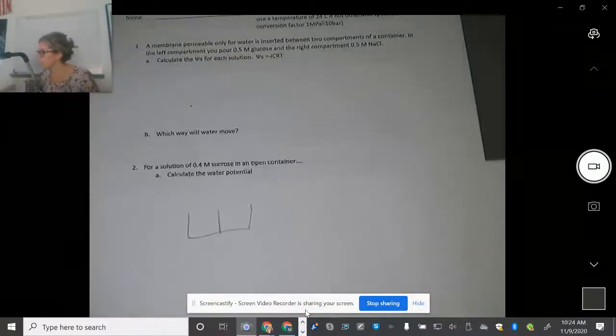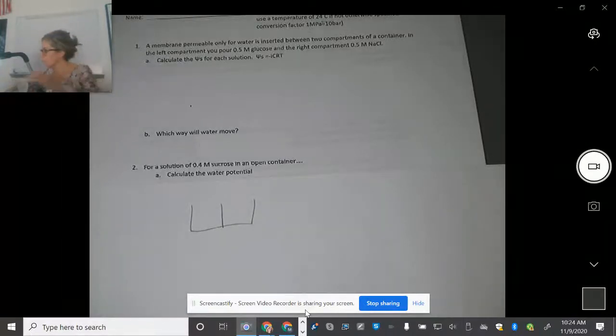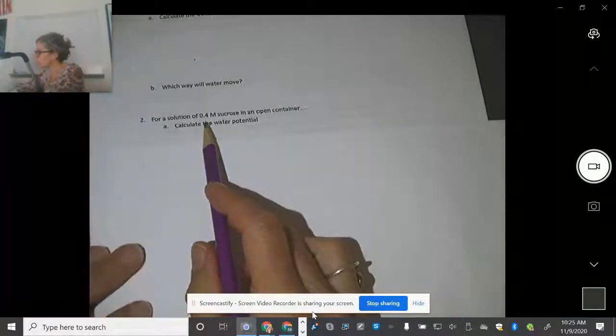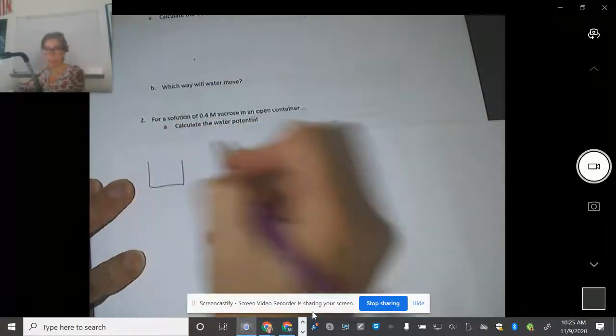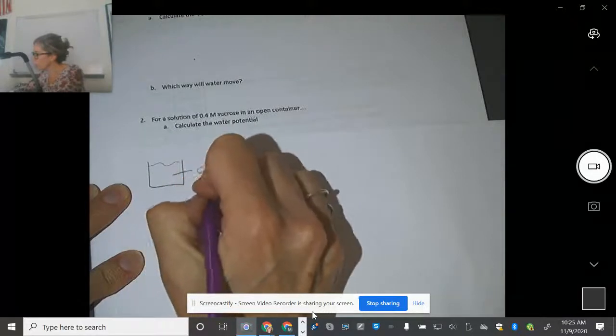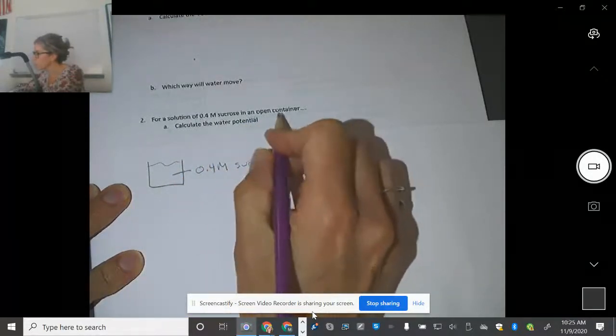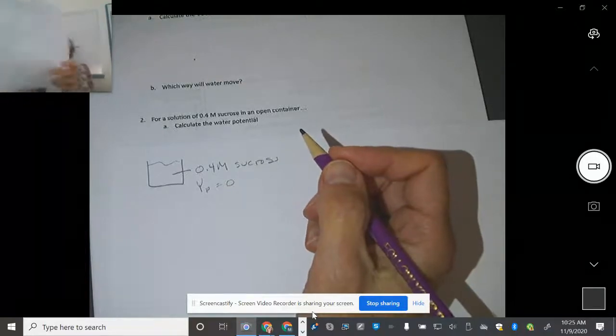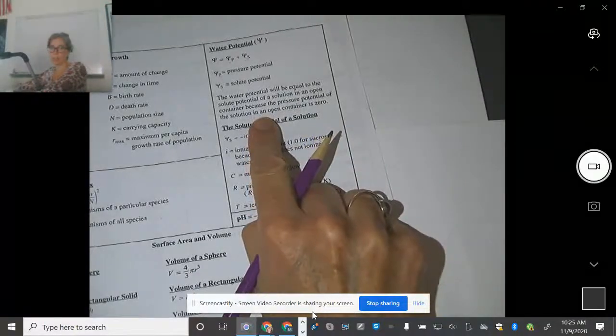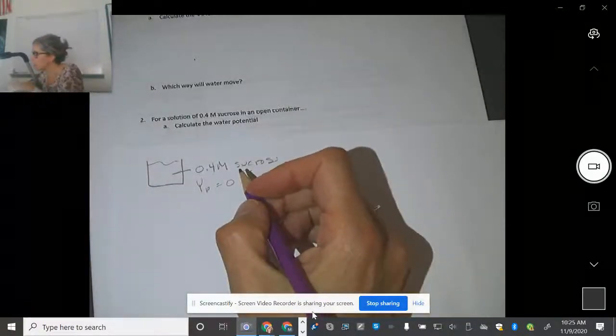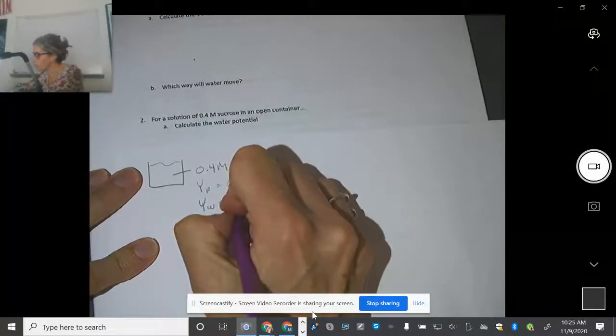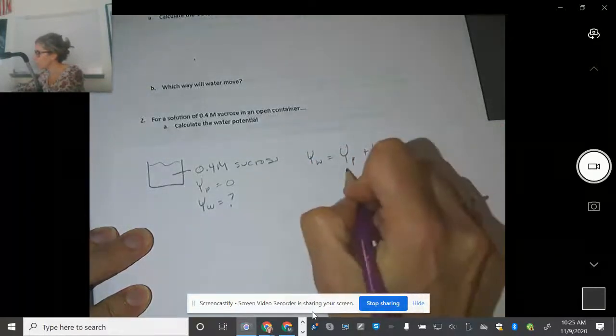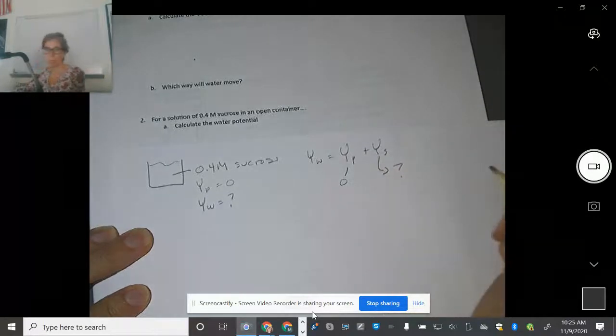And so that was part B of that problem. Now we're going to do number two. For a solution of 0.4 molar sucrose in an open container. Let's write down what we know here. So we've got 0.4 molar sucrose. It's in an open container, so that tells me that the pressure is 0. If you're in an open container, the pressure is 0. And that is right from your formula sheet. Calculate the water potential. So I know that my water potential equals the pressure potential plus the solute potential, but I already know that's 0. So that means this is what I want to find, the solute potential.